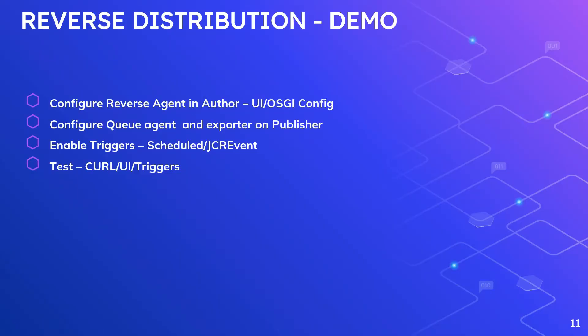Now let's do a demo. We are going to see how to configure a reverse agent in author. You can configure through either UI or OSGi config. Then configure a queue agent and exporter on publisher. We can enable triggers — scheduled or JCR event based — based on our requirement. Then we can test it using a curl command, or things can be tested through UI, or the triggers we configure will automate the reverse distribution.